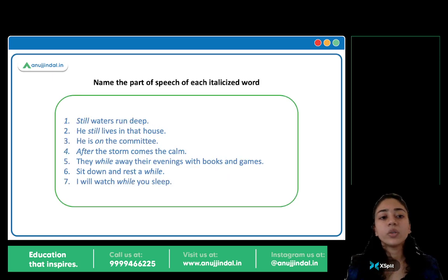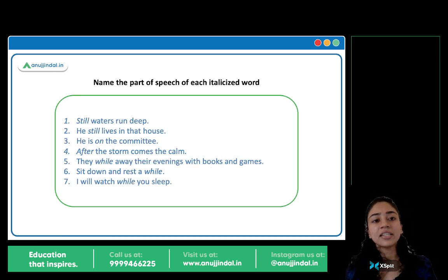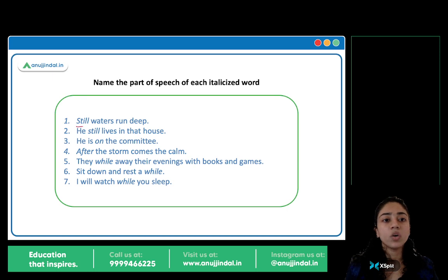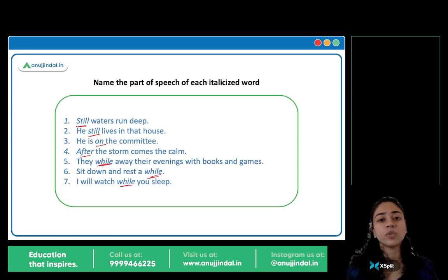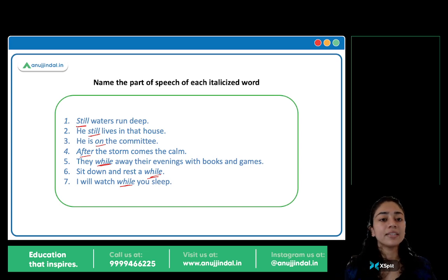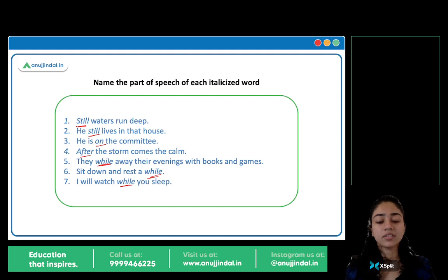Now you have seven sentences in front of you. Har sentence mein ek word hai jo italics mein diya hai — aapko batana hai ki woh italicized word kya hai: whether it's a noun, verb, preposition, adverb, kya hai. Name the part of speech for each italicized word. Pause the video and mark your answers.